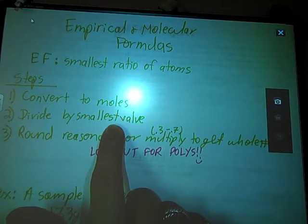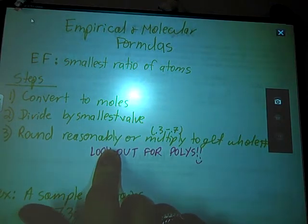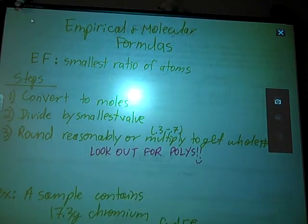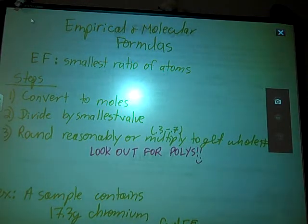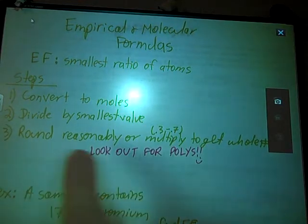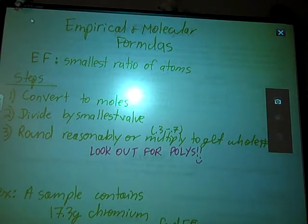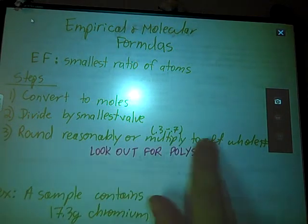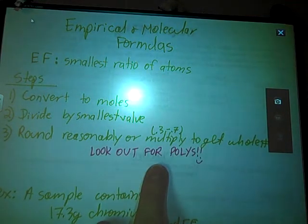And then you're going to round reasonably if you get nice pretty decimals that come out 0.999 or 0.0001 or even 0.1. But if you end up with a decimal that is between 0.3 and 0.7, you're going to end up having to multiply all of your values by some number to try to get a whole number. When you're trying to figure out the subscripts in this last step here, be on the lookout for polys.